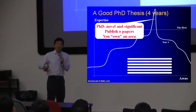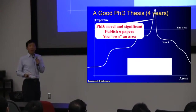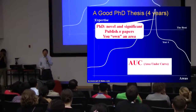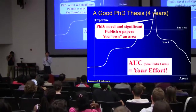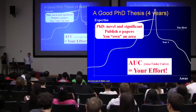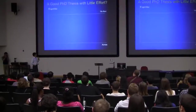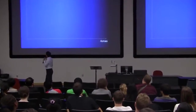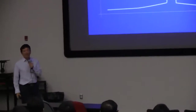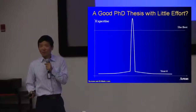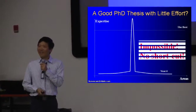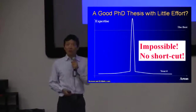Looking at this curve, you can see it is moving up. In mathematics, we have a term called the area under the curve, and you can see that area is growing. What does this area under the curve represent? It actually represents your effort. You have to put in a lot of effort just to push those curves up through the four years. Some students may not agree — they say, is it possible to make significant contributions with little effort, so the area under the curve is very small, and I can still go to a party every night? I can tell you that is impossible. There is no shortcut to doing good research.